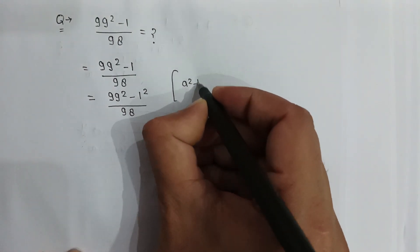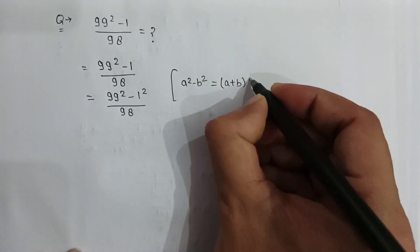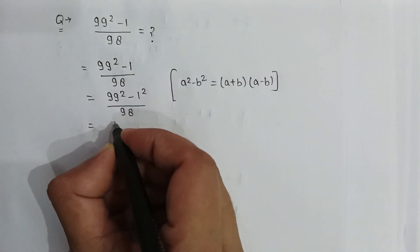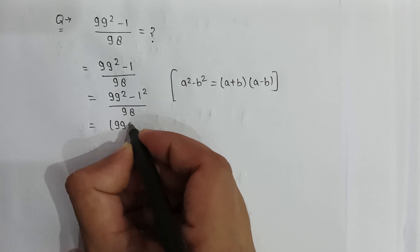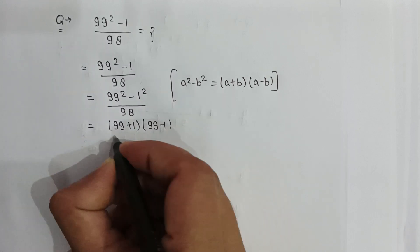If a squared minus b squared is written, then it can be written as (a plus b)(a minus b). So here it will be (99 plus 1) multiply by (99 minus 1) over 98.